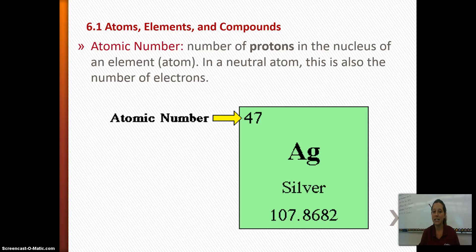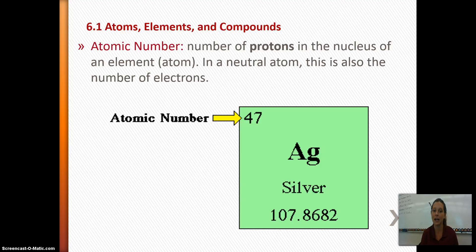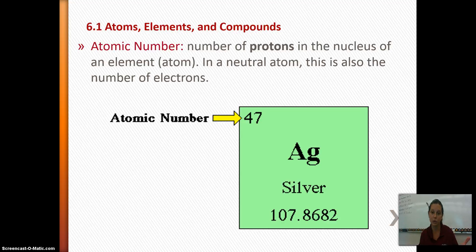We're going to break down each element block on the periodic table of elements, and you need to know what each number and symbol stands for. At the top you'll find the atomic number, which is the number of protons in the nucleus of an atom. In a neutral atom — which is what we will always be dealing with in biology — this also tells you the number of electrons, because protons are positively charged, so if the atom is neutral, you have to have the same number of electrons.